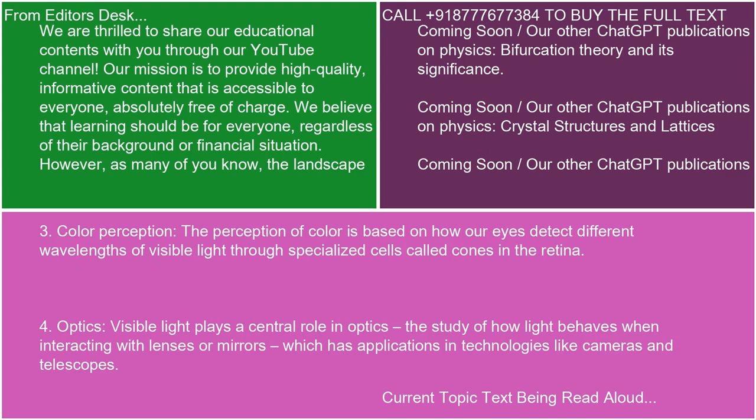3. Color perception. The perception of color is based on how our eyes detect different wavelengths of visible light through specialized cells called cones in the retina. 4. Optics. Visible light plays a central role in optics — the study of how light behaves when interacting with lenses or mirrors, which has applications in technologies like cameras and telescopes.